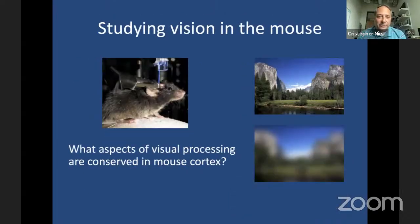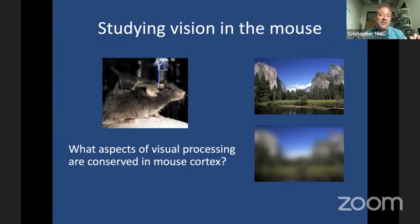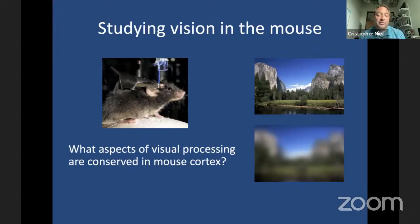Before diving into natural vision in the mouse, I want to explain what motivated us. This goes back to work I did as a postdoc in Michael Stryker's lab about 15 years ago. Around the time when optogenetics and exciting genetic tools were coming out, we wanted to use these tools to study visual processing and address long-standing questions going back to Hubel and Wiesel, like how you get orientation selectivity, but taking advantage of these tools in the mouse.